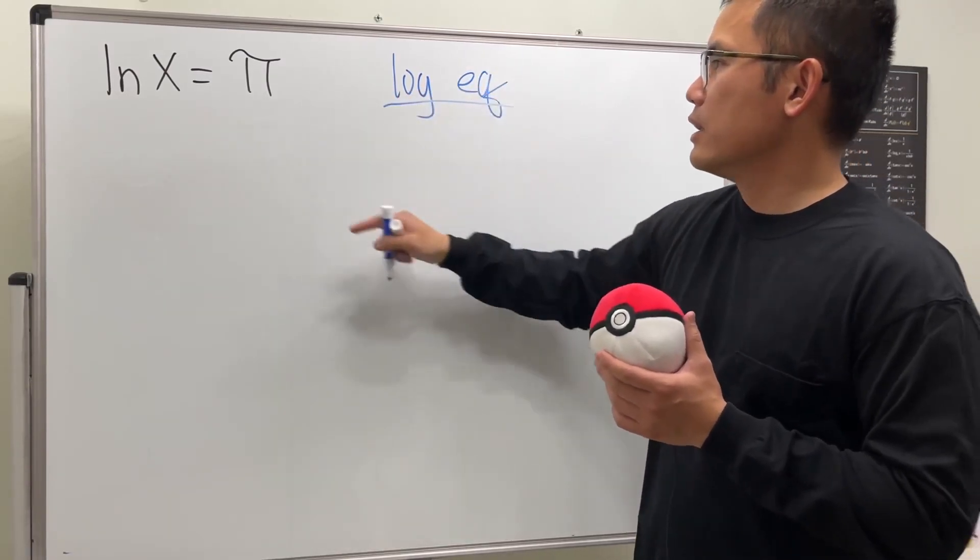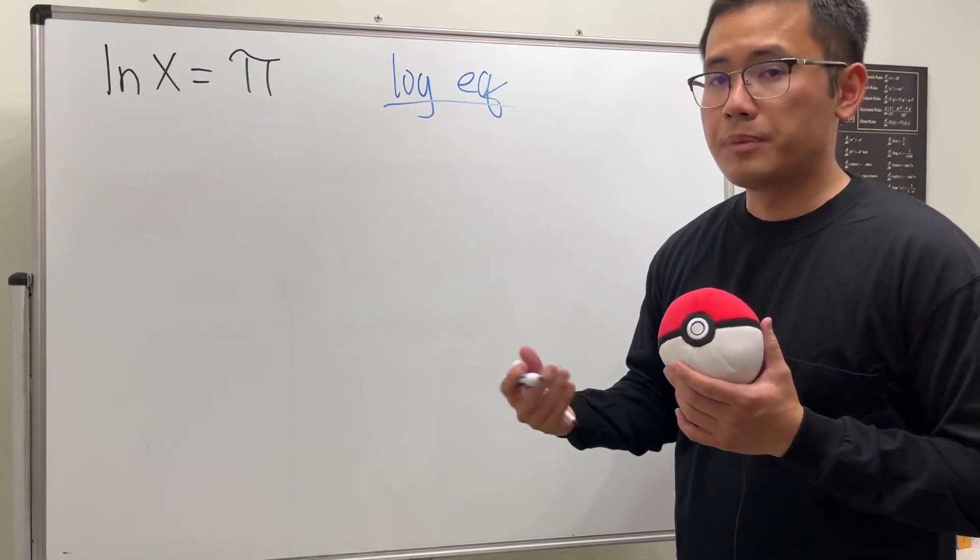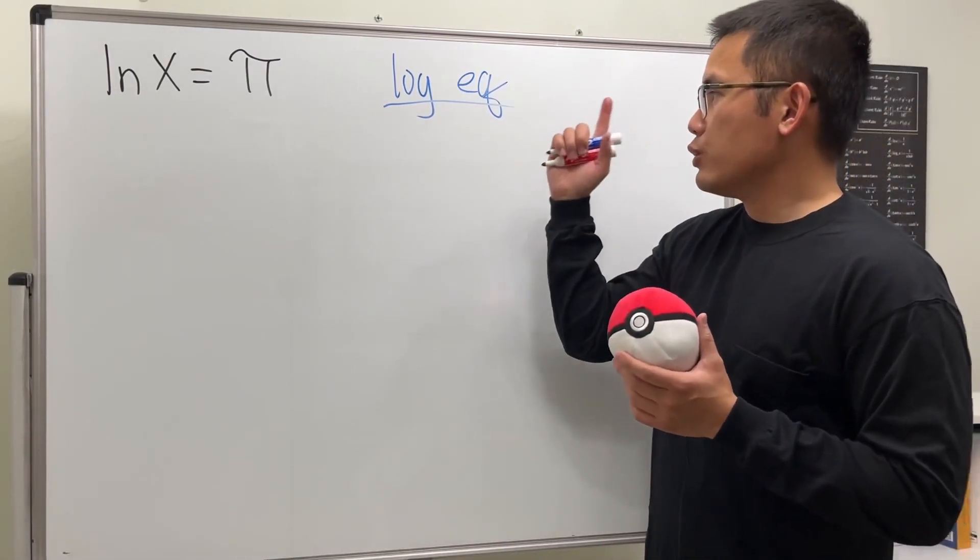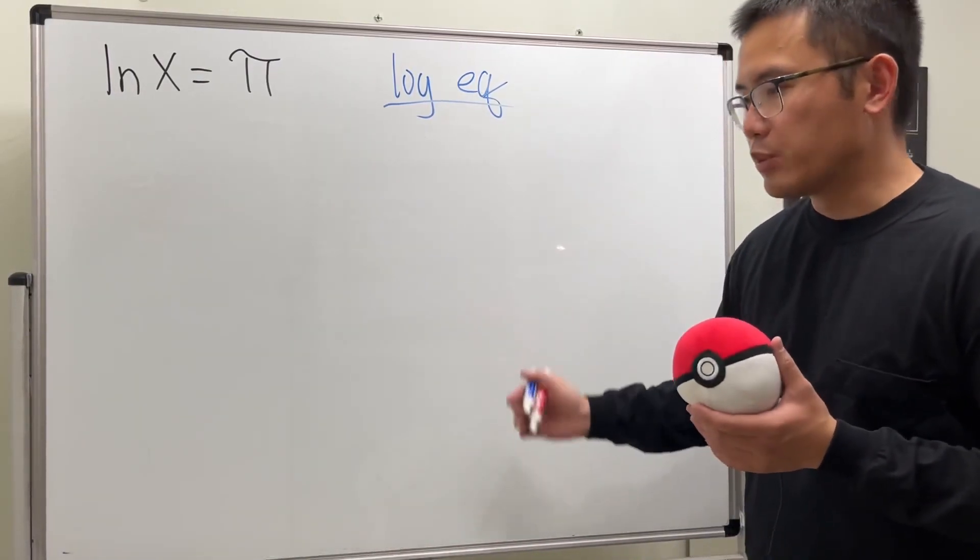And in fact, when we have the ln, it just means we have log base e. But anyway, to solve a log equation, these are the steps that we follow.